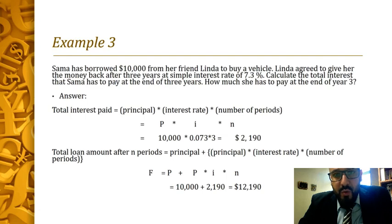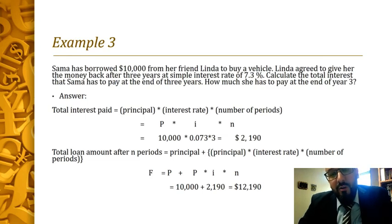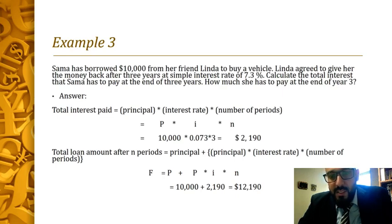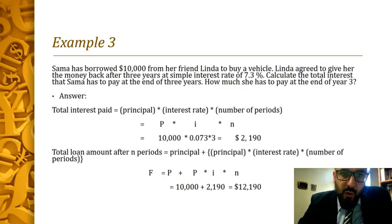Sama paid two thousand one hundred ninety dollars in interest as simple interest over three years. That's only the interest charges over the past three years. Now we add this amount to the original principal: ten thousand plus two thousand one hundred ninety equals twelve thousand one hundred ninety — that's what Sama has to pay Linda.